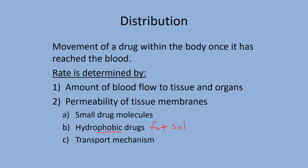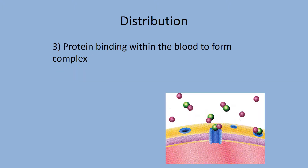The blood-brain barrier is not a physical barrier like the meninges. It consists of microglia cells that prevent certain substances from entering or leaving the brain. A newborn infant has an underdeveloped blood-brain barrier and is therefore more susceptible to drugs and chemical compounds.